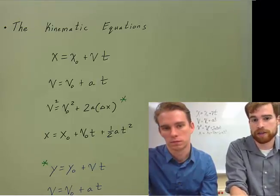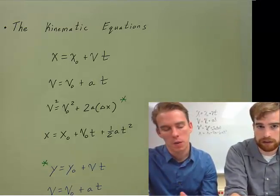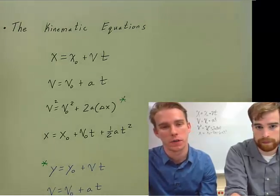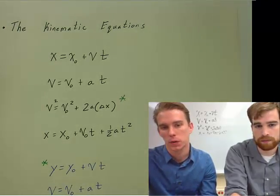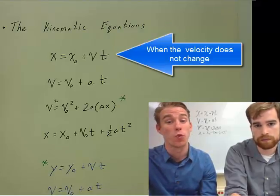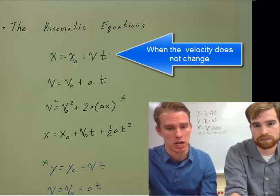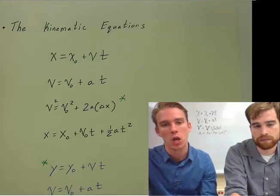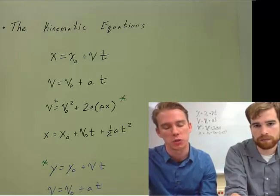Feel free to come back to this. We encourage you to have these in front of you at all times. The first is the position-time equation: x = x₀ + vt. That's when the velocity does not change. You only use that equation when the acceleration is zero meters per second squared.